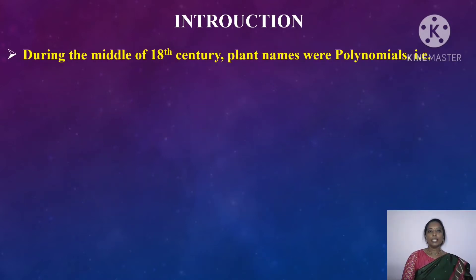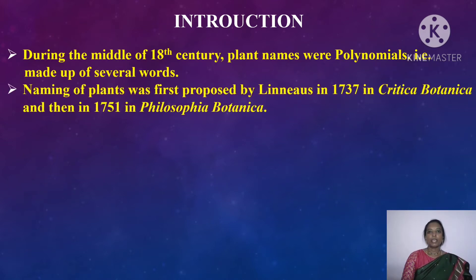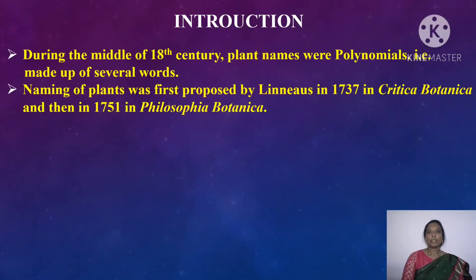During the middle of the 18th century, plant names were polynomials, meaning the name of the plant used to consist of several words. Later, Gaspard Bauhin was the scientist who came up with the novel idea of having two names for every plant. He proposed names in which the first name represents genus and the second name represents species. This is known as the binomial system of nomenclature.